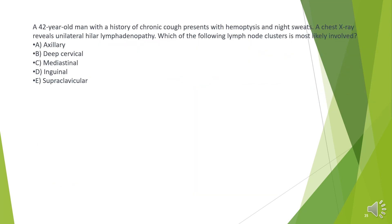A 42-year-old man with a history of chronic cough presents with hemoptysis and night sweats. A chest X-ray reveals unilateral hilar lymphadenopathy. Which of the following lymph node clusters is most likely involved? A. Axillary. B. Deep cervical. C. Mediastinal. D. Inguinal. E. Supraclavicular.